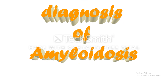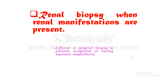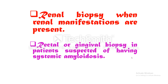How can we diagnose amyloidosis? We can do a renal biopsy when there is renal manifestation. If only systemic amyloidosis is suspected, we can do rectal or gingival biopsy — it is easier to obtain rectal or gingival biopsy in patients suspected of having systemic amyloidosis.